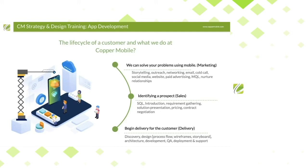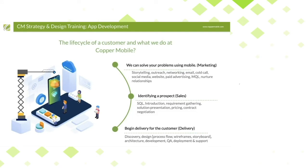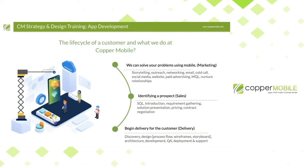After pricing, we do contract negotiation — those are the first two elements of what Copper Mobile does. When we get the signed contract, we send it off to delivery. The sales person doesn't disappear; we do a handoff. Because we practice consultative sales, we try to be present at the initial delivery meeting to transfer knowledge to the delivery team and ensure they know exactly what they're building before the kickoff.